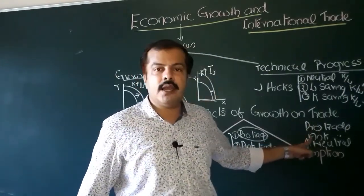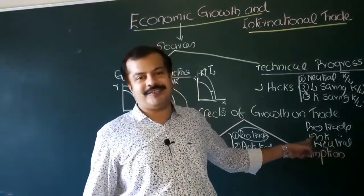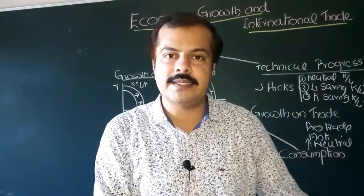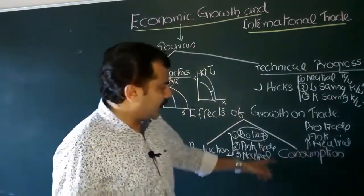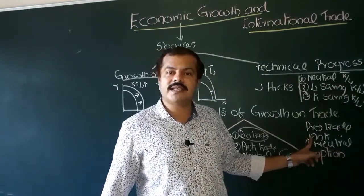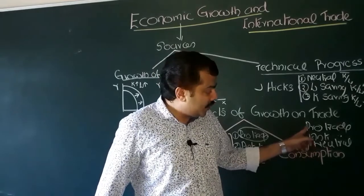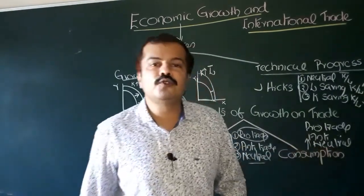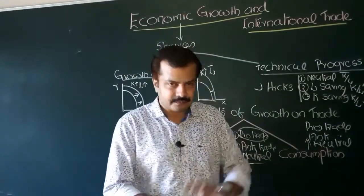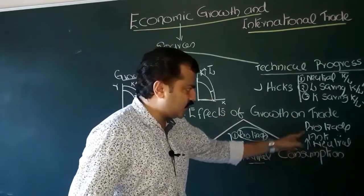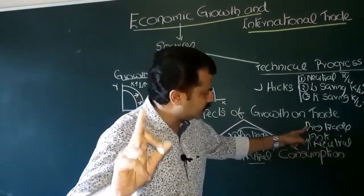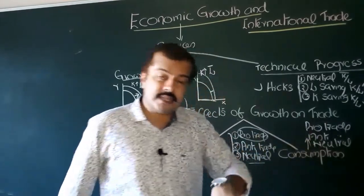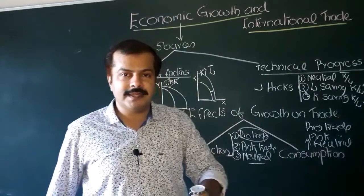Consumption is anti-trade when the consumption of a country's exportable commodity increases. When the consumption of the exportable commodity rises domestically, the country cannot export as much because domestic consumption is higher. Consumption has a neutral effect when the consumption of both importable and exportable commodities increases in the same proportion.